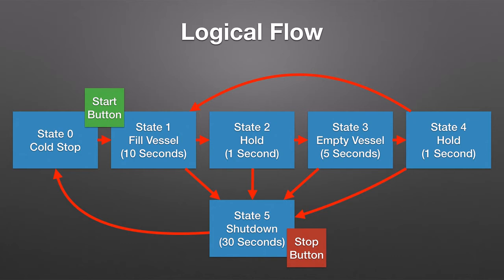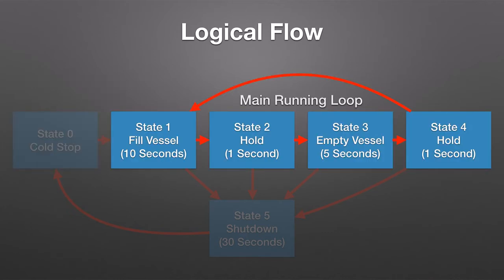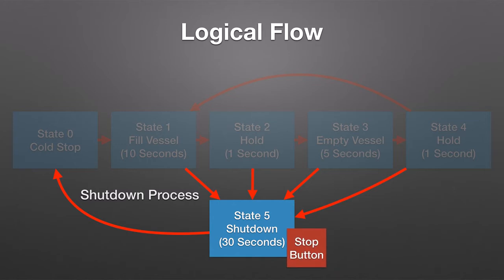There are three major sub-processes and trigger transitions here: the startup process, which transitions to the main loop process upon the press of the start button, and the shutdown process, which is triggered whenever the stop button is pressed during the main loop.